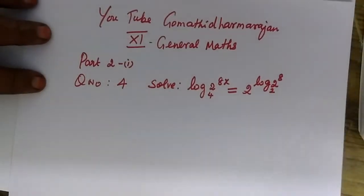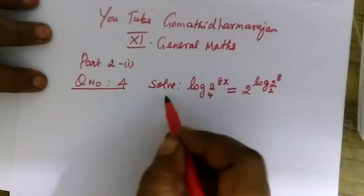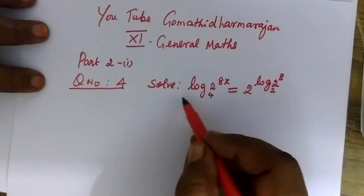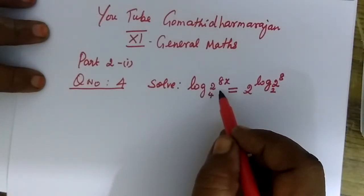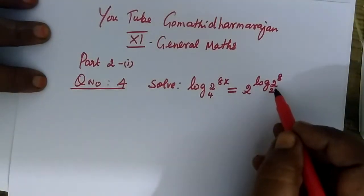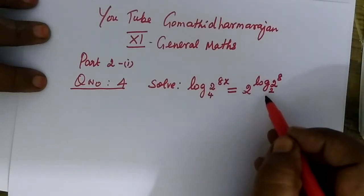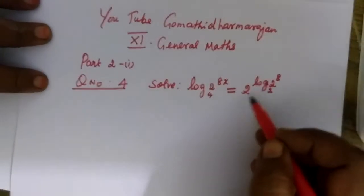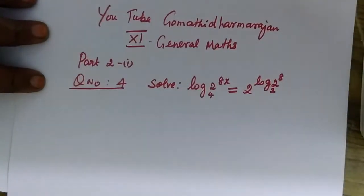Today we want to see 11th standard general math, Part 2, Question number 4. I have written the question wrong, so I am taking this again. The question for this is correct now. The question is: solve log 2 to the base 4, power 1 is 2x, this is equal to 2 into log 2 to the base 2.